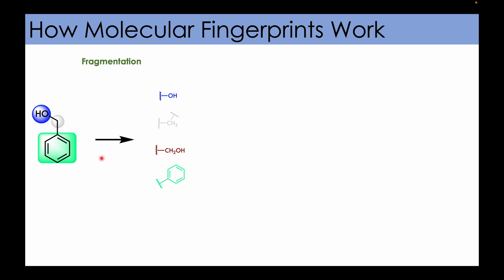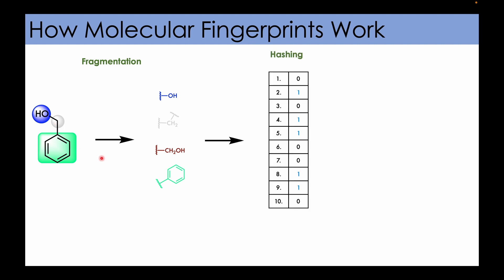For example, this hydroxy group, methylene group CH2OH, and this benzene ring — and of course there are many more fragments you can get from this molecule. Next, in order to generate the fingerprints in the form of zeros and ones, you need to do hashing. It maps the fragments or features into a fixed-size binary vector using a hash function, where each bit represents the presence or absence of a specific feature. Zero means absence and one means presence.